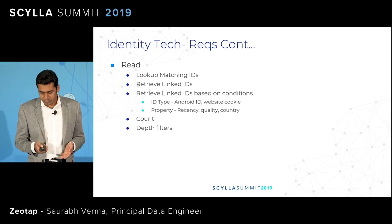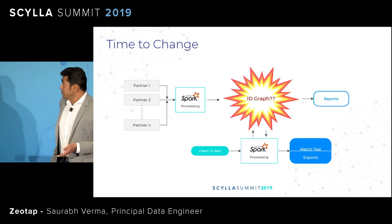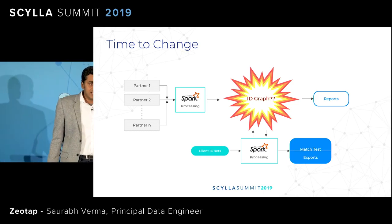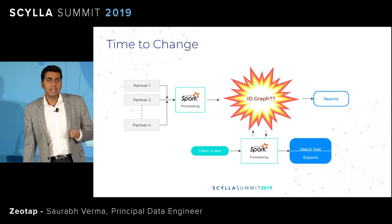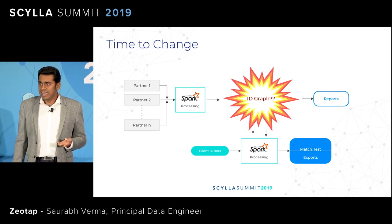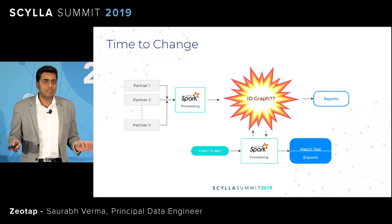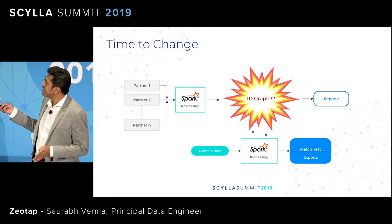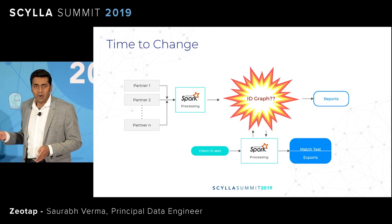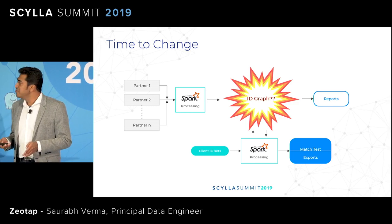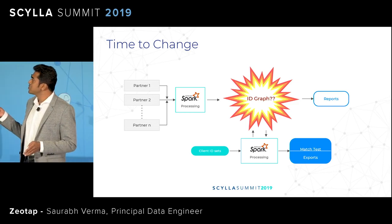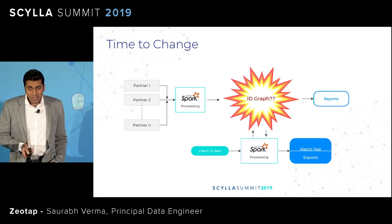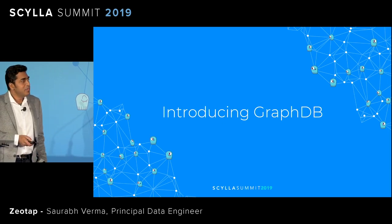So there was time to change. Whatever I've been talking about — parlances like transitivity, depth, connections, linkages — these are all directly what you studied in college in graph theory. So we thought, is there an ID graph that can directly replace our storage and give all this out of the box? That is when we thought we would try POCs and productionizing the V1 of the system using an ID graph, and welcome GraphDB to our ecosystem.